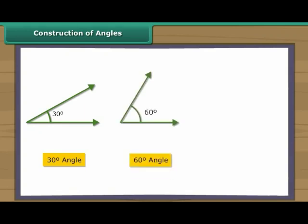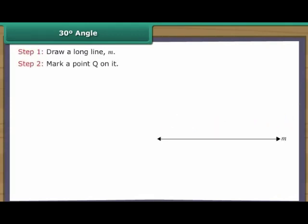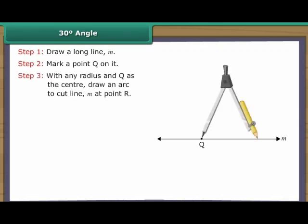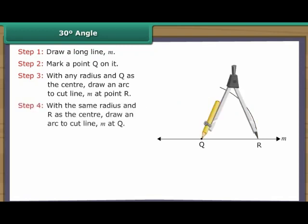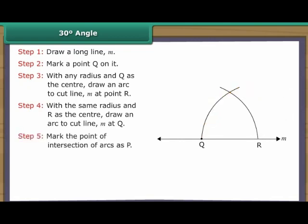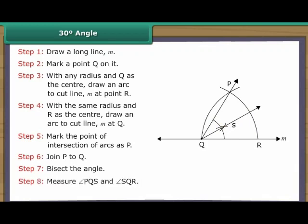Construction of Angles. Let us now construct some special angles one by one: 30 degree angle, 60 degree angle, and 120 degree angle. Construction of 30 degree angle. Draw a long line M and mark a point Q on it. With any radius and Q as the centre, draw an arc to cut line M at point R. With the same radius and R as the centre, draw an arc. Mark the point of intersection of arcs as P. Join P to Q. Bisect the angle. Measure angles PQS and SQR. Angle PQS is equal to angle SQR, which equals 30 degrees.